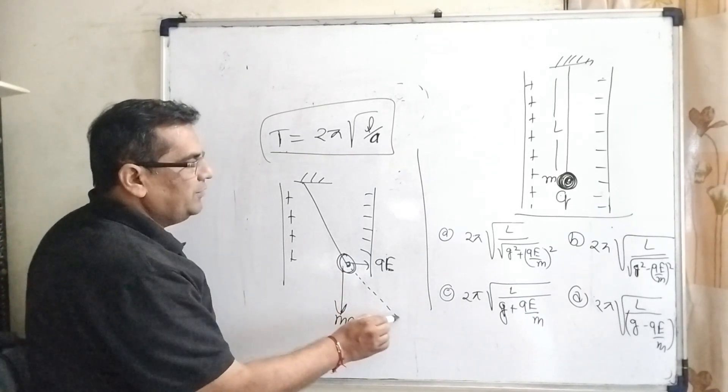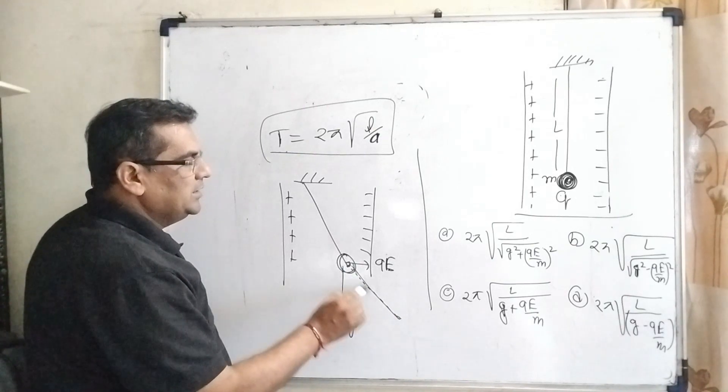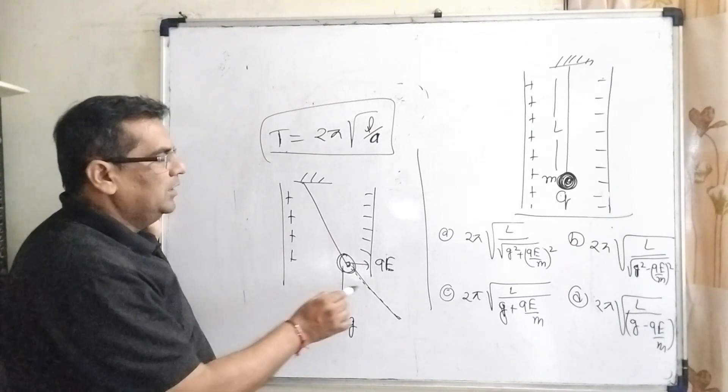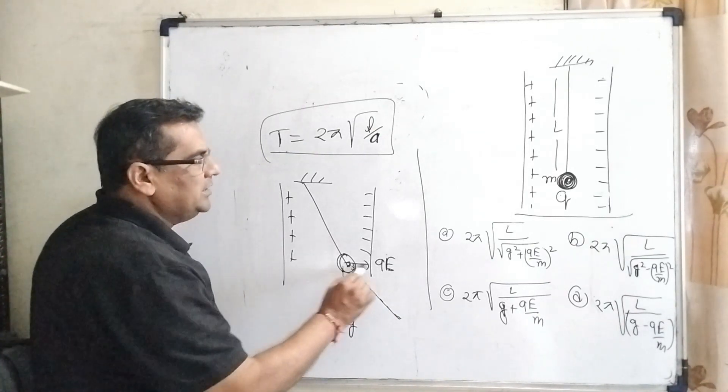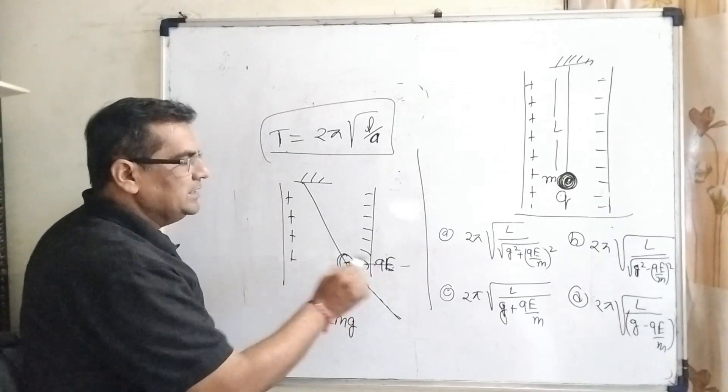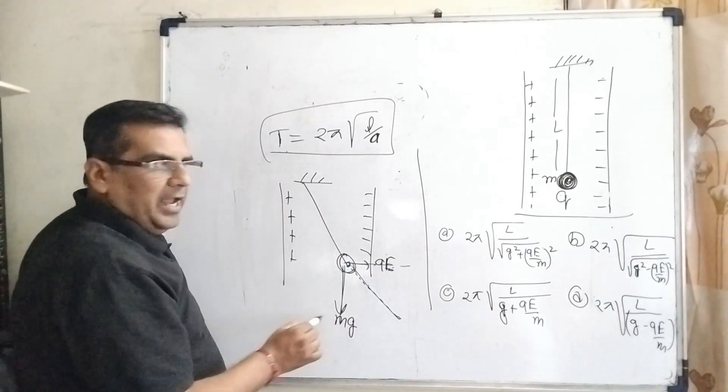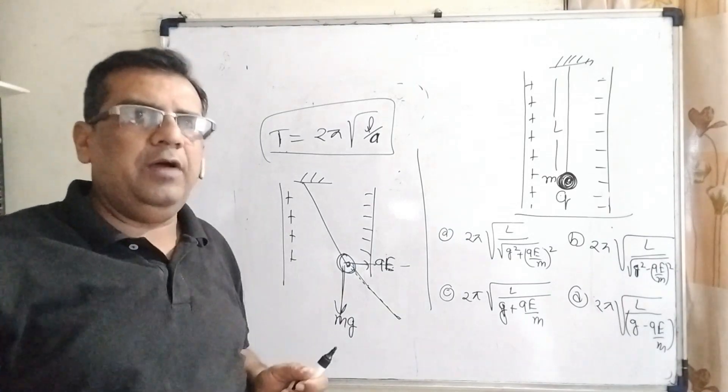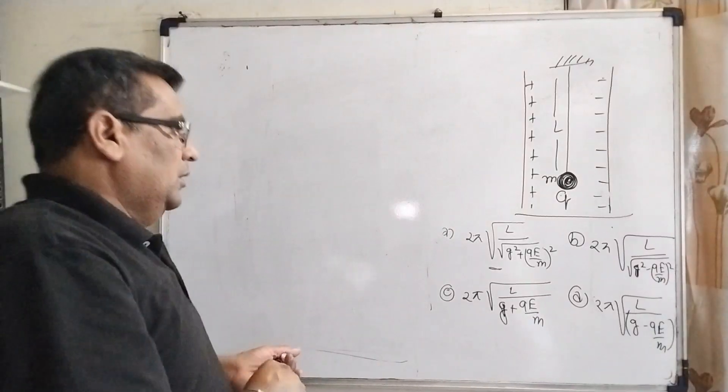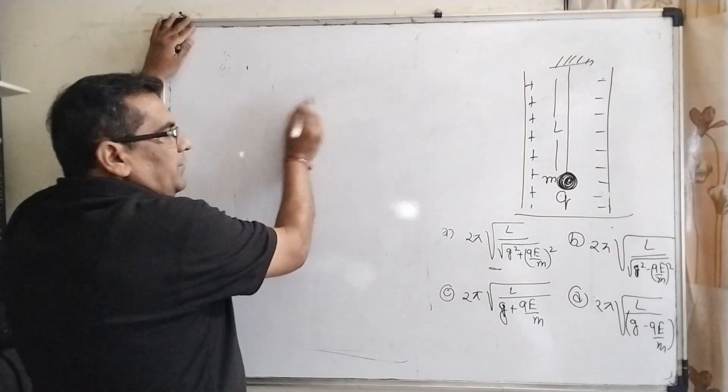So therefore, let us first find out the resultant force or acceleration. Here this acceleration acts in this direction, Mg acts in downward direction. So therefore, we have to find out the resultant force.